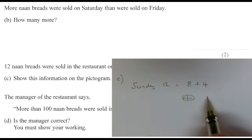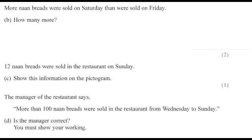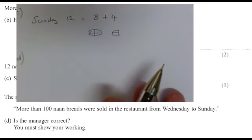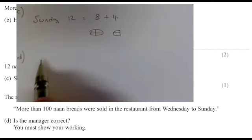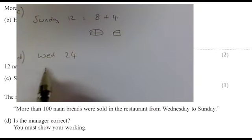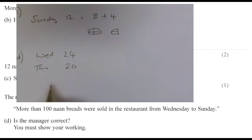Now the manager says here 100 breads sold from Wednesday to Sunday, so we've got to write down each day how much was sold, add it all up, and see if it's more than 100 or not. So Wednesday, 24—we already answered that question. Thursday, that's going to be reading off the information from the chart.